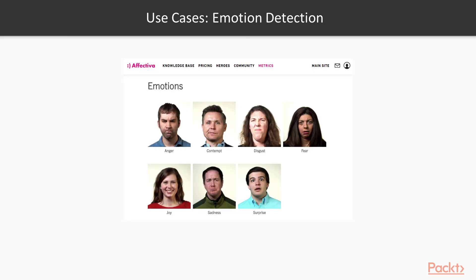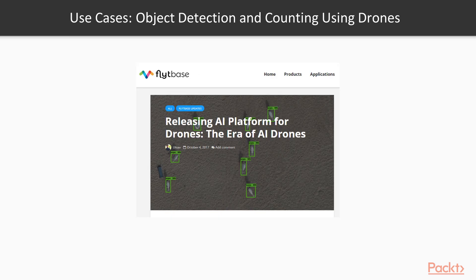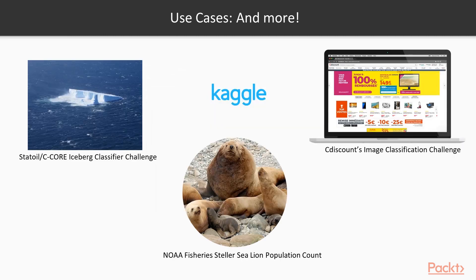Emotion detection is a big industry. For example, it is being used in the media industry to understand consumer engagement, and in the automotive sector to detect the emotional state of the driver. There are several use cases applied to aerial images taken by drones, like detection and counting of objects, detection of cracks in buildings and other structures, and surveillance. There are also many use cases being solved via Kaggle competitions, such as detection of icebergs, counting of sea lions, and identifying the category of a product just by looking at images. I hope this small set of real-life examples has made you excited about this field of study.